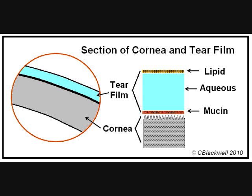The middle layer of the tear film is the watery or aqueous layer. It is produced by the tear gland and constitutes most of the tear layer. On the surface is a layer of oil that acts to reduce evaporation. It comes from oil glands in the eyelids.